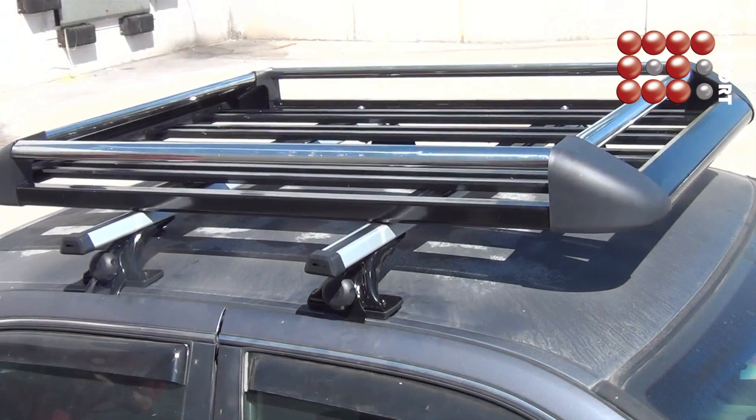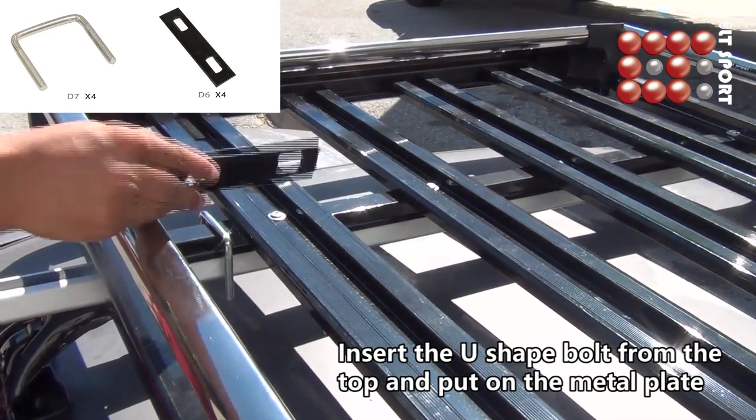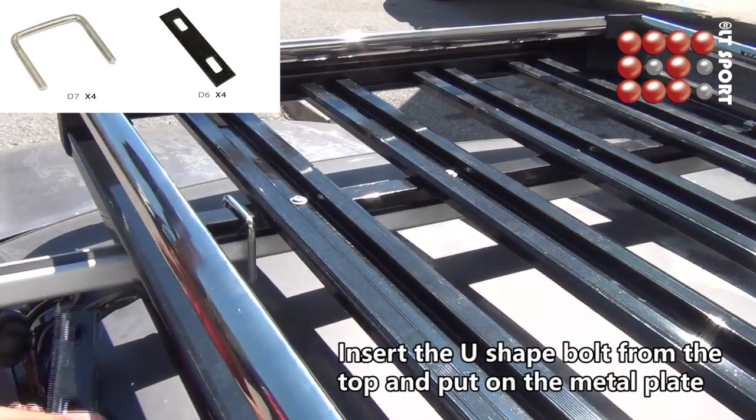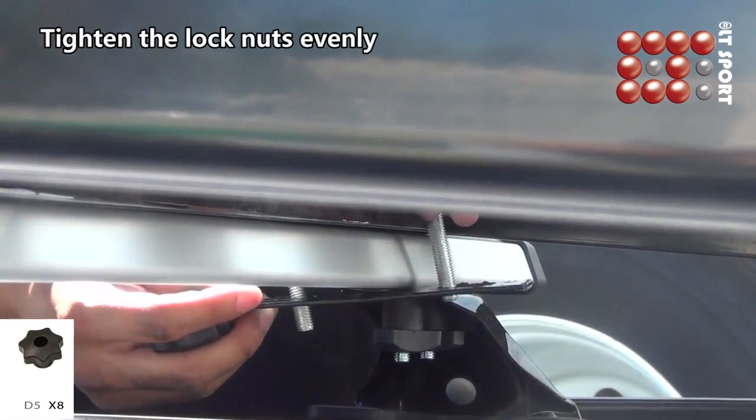First put the U-shaped bolt from the top. Second, put on the metal plate. Use one hand to hold on the U-shaped bolt and metal plate together.